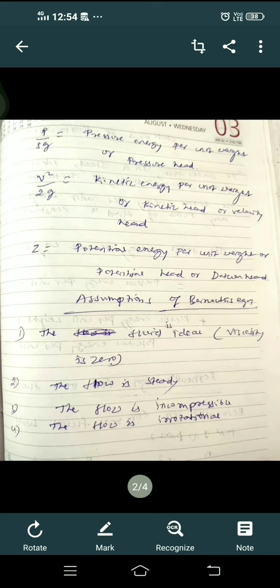To derive Bernoulli's equation, we are making some assumptions. The fluid is ideal; for the ideal fluid, viscosity is zero. The flow is steady; for steady flow, the fluid characteristics like velocity, pressure, density at a given time are constant. The flow is incompressible.